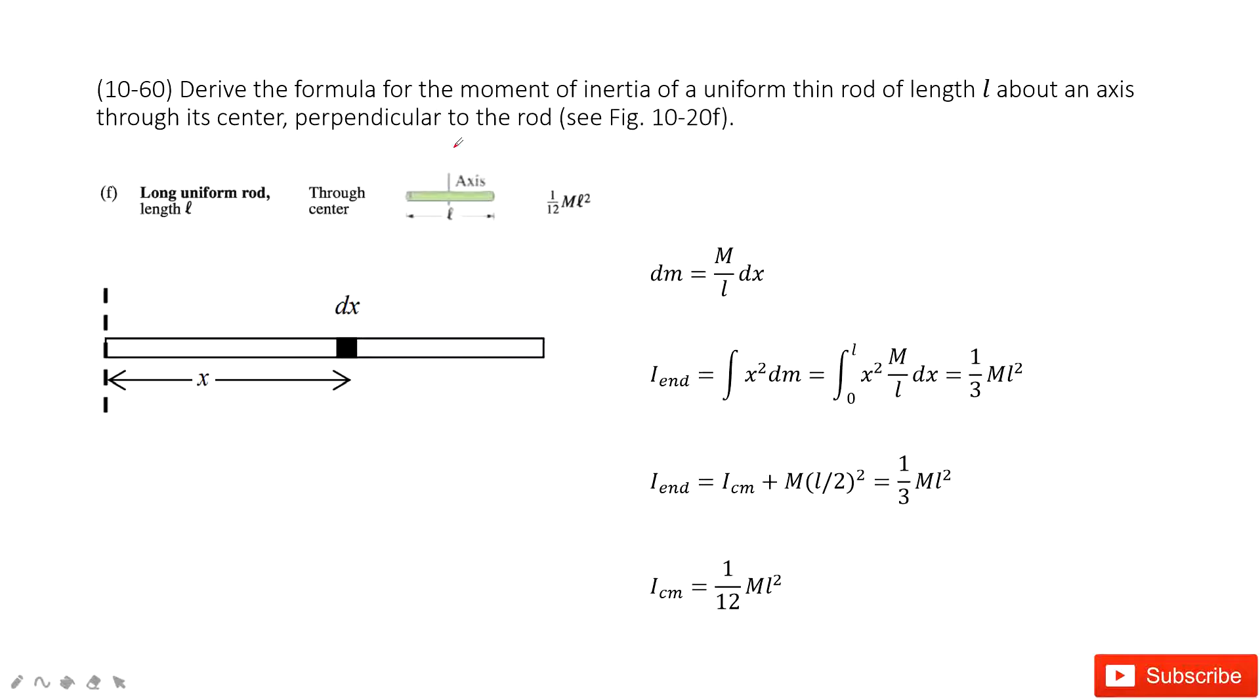There we need to find the formula for moment of inertia of a uniform thin rod at the center of mass. The moment of inertia for this rod is 1 over 12 ml squared. So this one we need to prove.